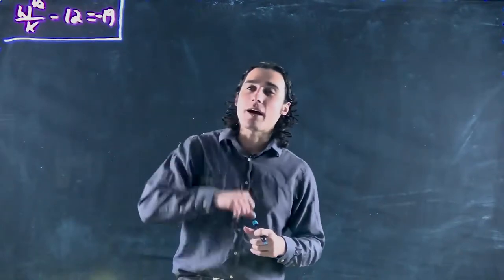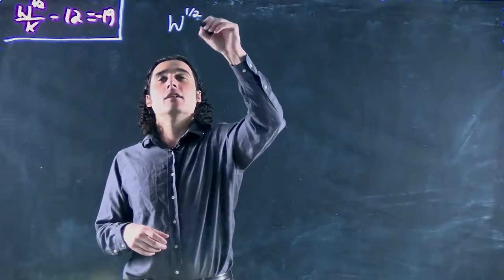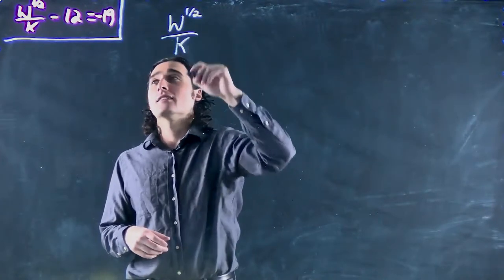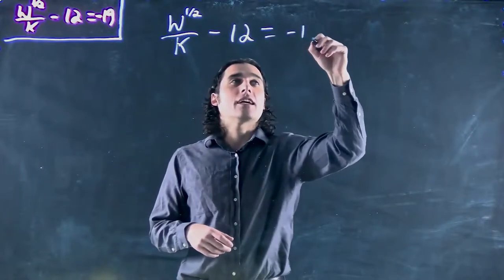Welcome back. Still more power functions. We've got w to the one-half all over k minus 12 all equal to negative 19.